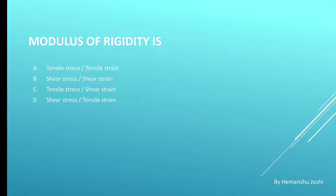Next question. Modulus of rigidity is: options are A. Tensile stress by tensile strain, B. Shear stress by shear strain, C. Tensile stress by shear strain, and D. Shear stress by tensile strain. Correct answer is B. Shear stress by shear strain.